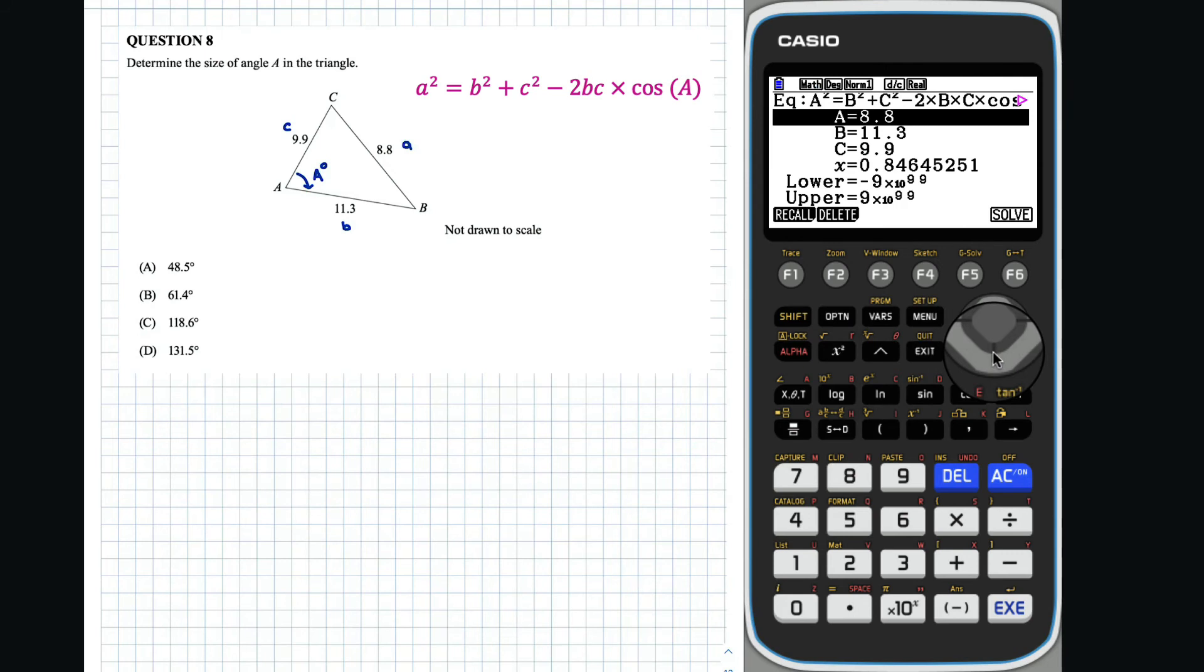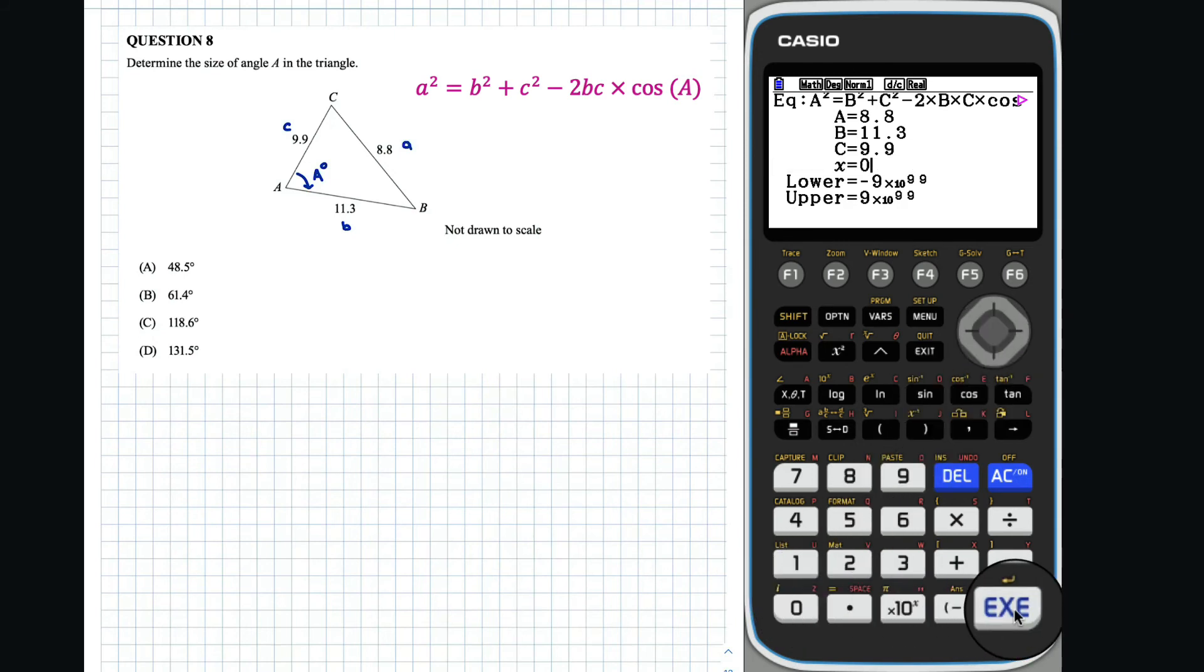So, we can now enter in our values for A, B and C. A is 8.8, B is 11.3 and C is 9.9. To ensure we get the correct answer, it's best to make x equal to 0 here. The lower and upper values give us a bound for the angle A. Given A is in a triangle, it can be no bigger than 180 and no smaller than 0.